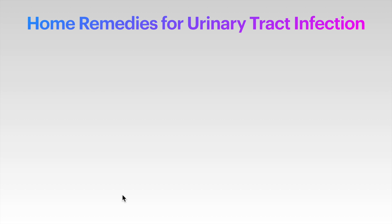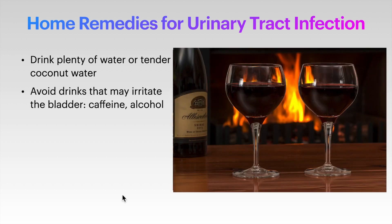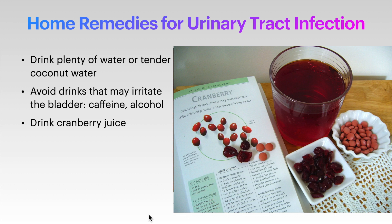Home remedies for UTI include drinking plenty of water or tender coconut water to dilute urine and flush out bacteria. Avoid coffee, alcohol, and soft drinks containing citrus juice or caffeine, as they can irritate the bladder and aggravate frequency or urgency. Drinking cranberry juice may also help in treatment and prevention of future UTI.